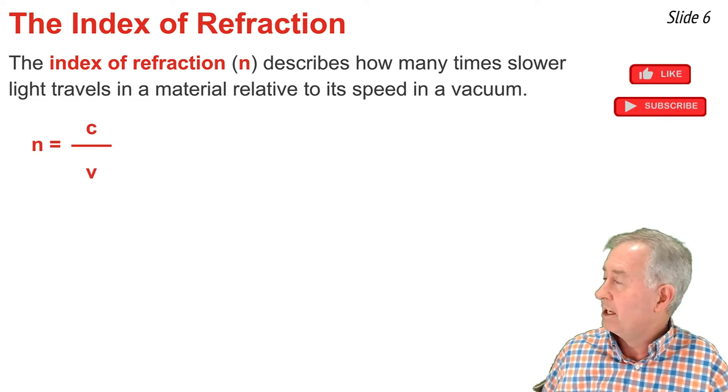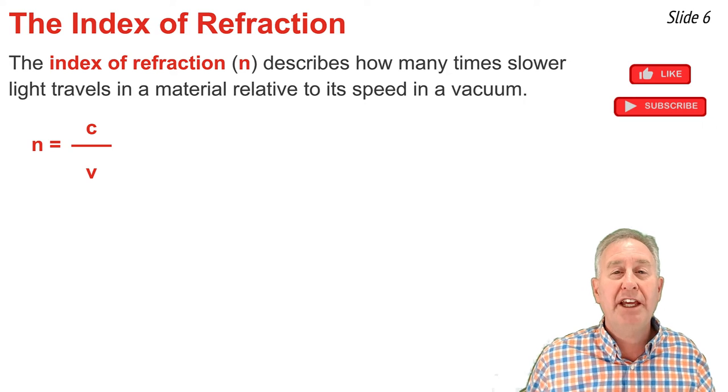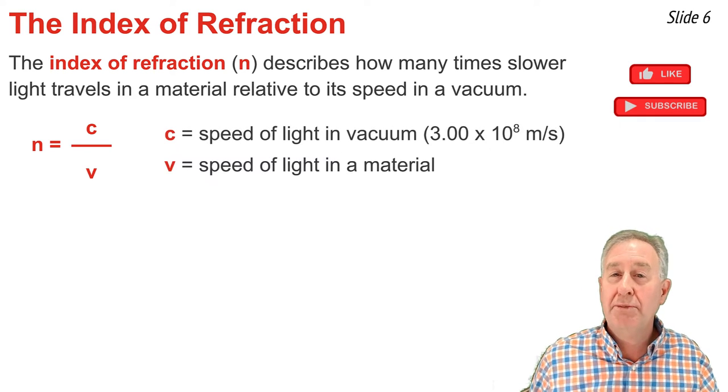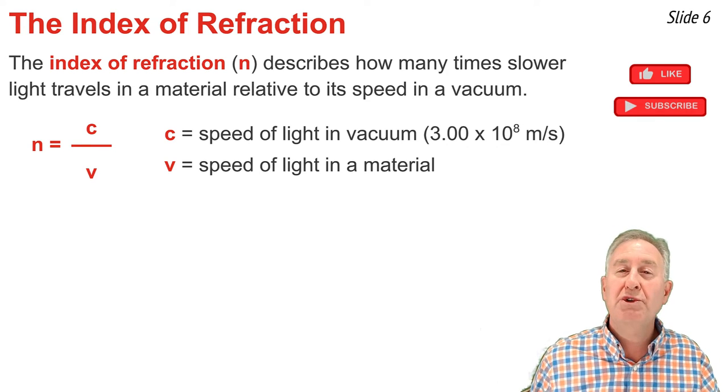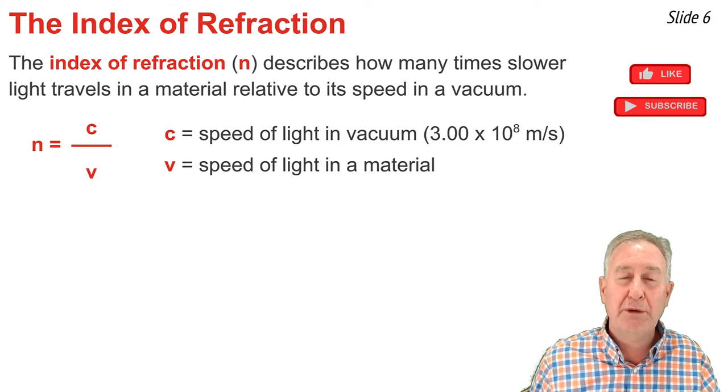The equation for n, the index of refraction, is n = c/v, where c is the speed of light in a vacuum (3 × 10⁸ m/s), and v is the speed of light within that particular material.